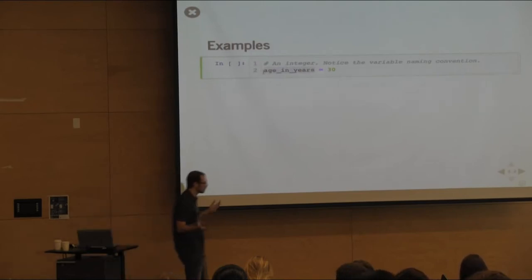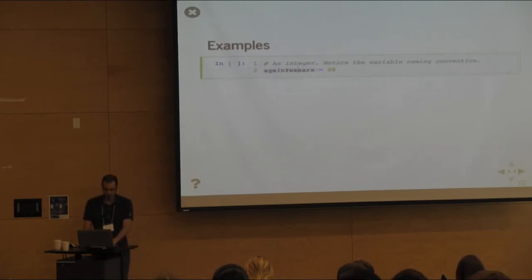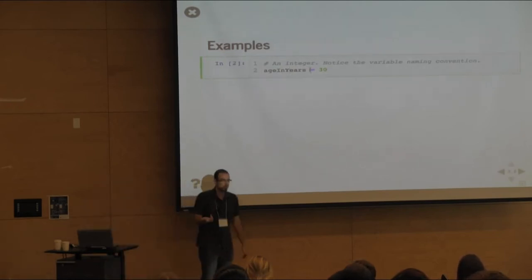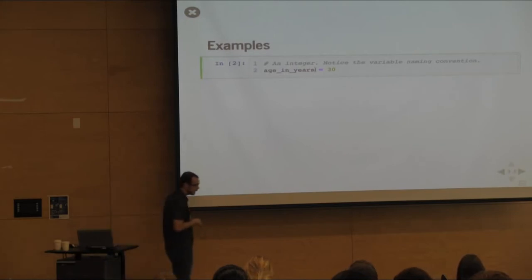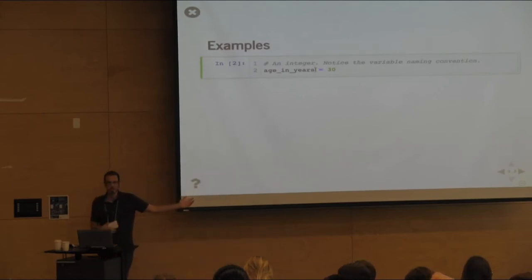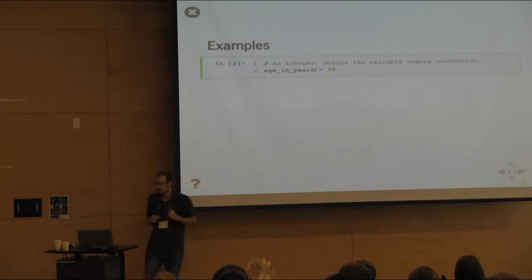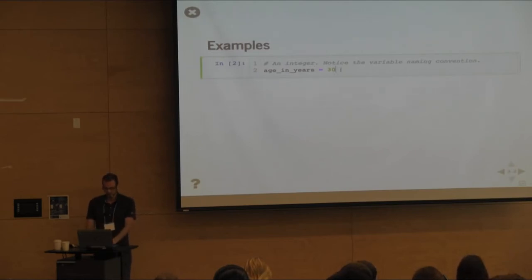Languages have different naming conventions. The Python community is pretty pedantic about these, which I see as a strength — it makes it much easier to read other people's code. The convention for variables is always lowercase, separating words with underscores — what's called snake_case. We run this and now we've assigned the value 30 to the variable age_in_years.